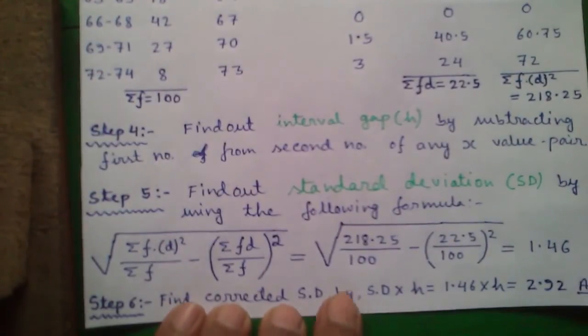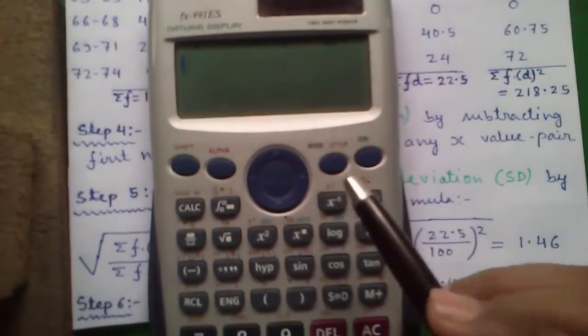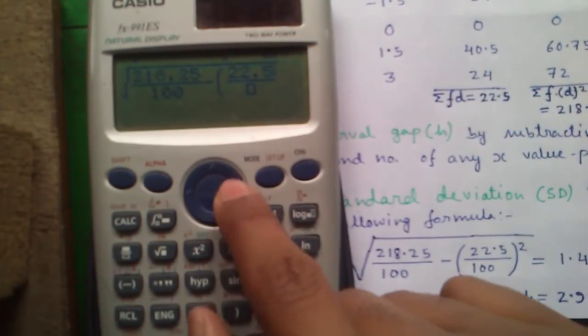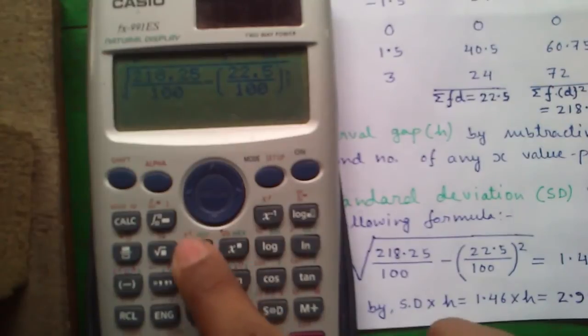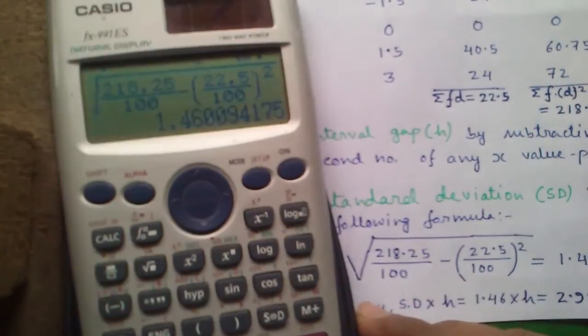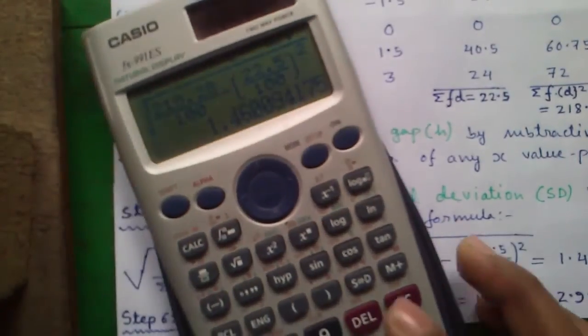So that becomes on your Casio FX991ES calculator, root button, fraction button, 218.25 divided by 100 minus first bracket, fraction, 22.5 by 100, bracket close, whole square and press the equals to button. Press the S to D button. So that becomes 1.46.